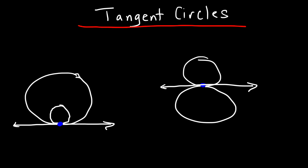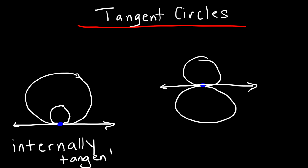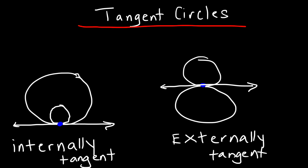What's the difference between the two examples? On the left, the two circles are internally tangent — two circles are internally tangent if one circle lies inside of another and they intersect at exactly one point. On the right, we have two circles that are externally tangent: they both lie outside of each other and still intersect at exactly one point. Just remember: internal means to be inside of something, external is outside of something.